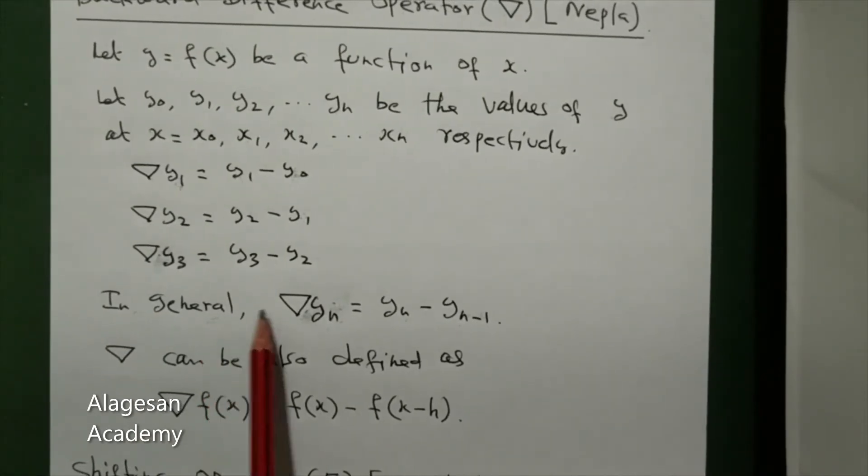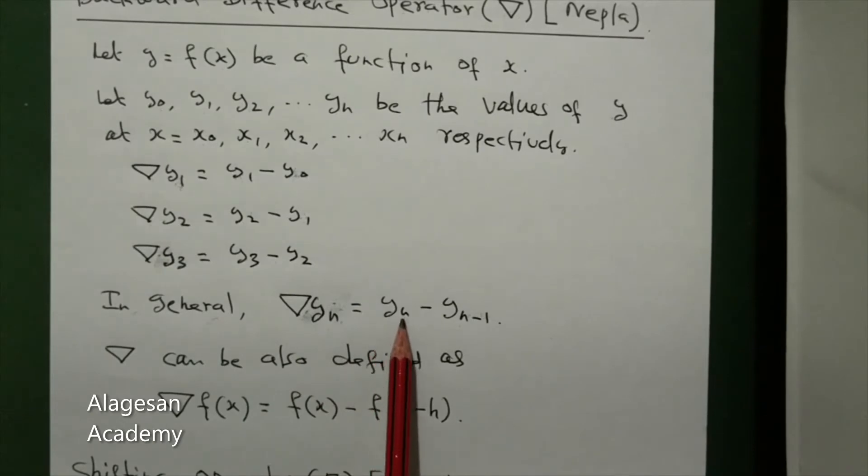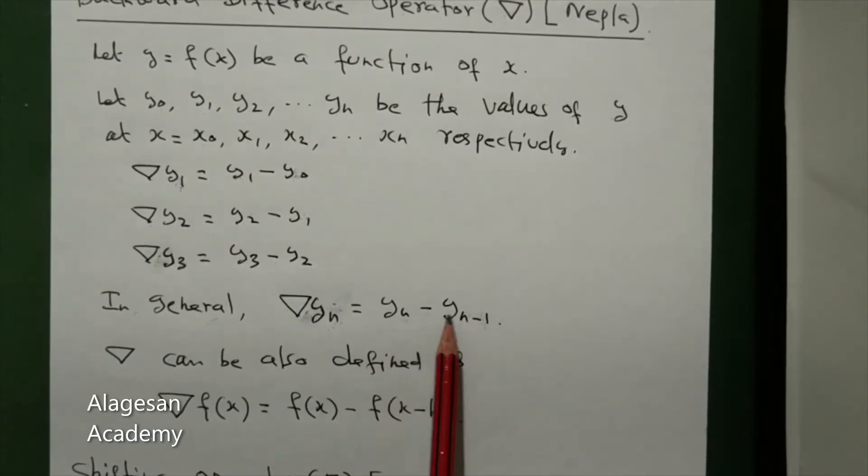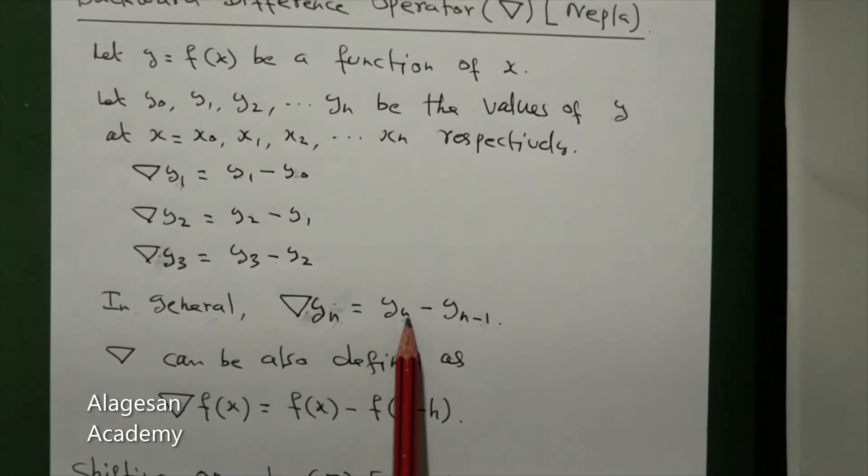This is the backward difference operator definition. In general, nepla yn is written as yn minus yn minus 1. For example, if n equal to 1, y1 minus y0. If n equal to 2, y2 minus y1. If n equal to 3, y3 minus y2. This is how it works.